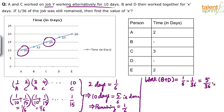B and D together finished 1/6 minus 1/36, which is 6/36 minus 1/36 = 5/36. After A and C left, 1/6 of the work was remaining. B and D came in, worked for x days, and still 1/36 of the job remained — so B and D have done 5/36 of the work. This 5/36 of work was completed in x days.